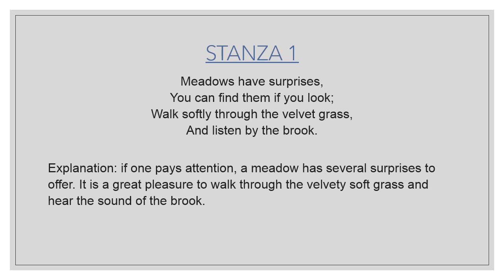The poet is saying meadows have surprises — the grasslands have surprises for us. You can find them if you look carefully. 'Walk softly through the velvet grass' — velvet grass means the very silky, very smooth grass. The poet is asking us to walk softly through the velvet grass and listen by the brook — listen to the moving small river. That's what the poet is saying in Stanza One.